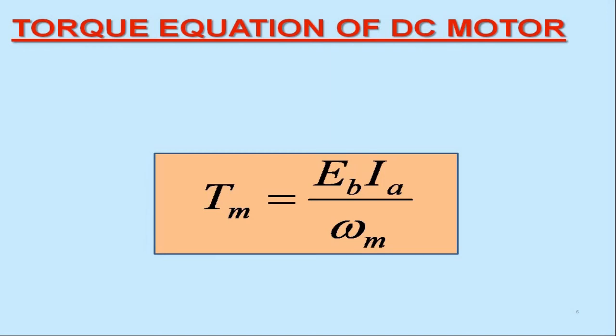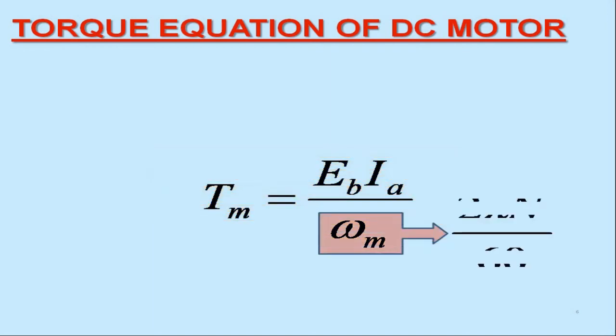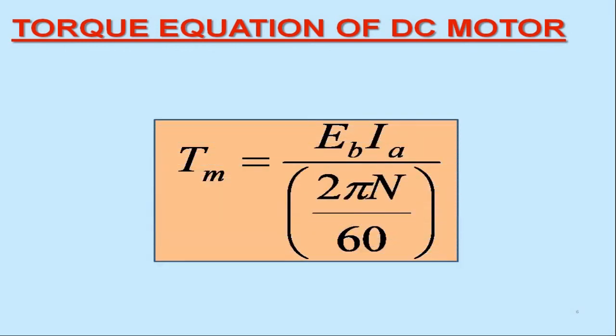When rotational speed of armature is given in RPM, we may represent Omega M as 2 pi N over 60. So, the torque equation is finally represented by this equation.